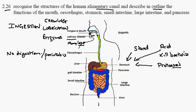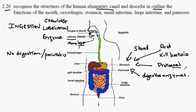As food passes from the stomach into the small intestine, there is the addition from the pancreas of digestive enzymes. These enzymes bring about the complete breakdown of food so that it can be absorbed in the small intestine.